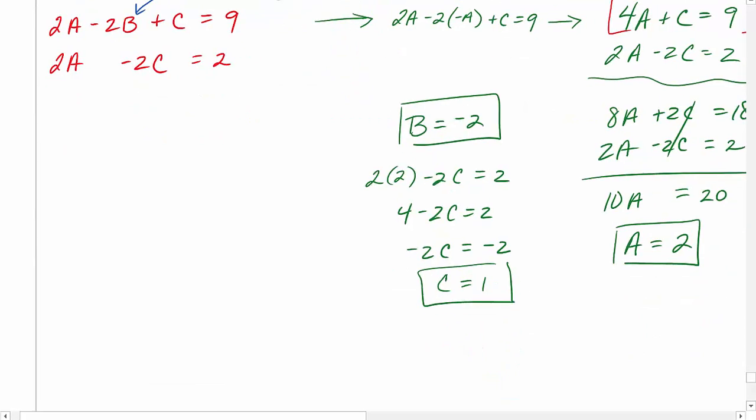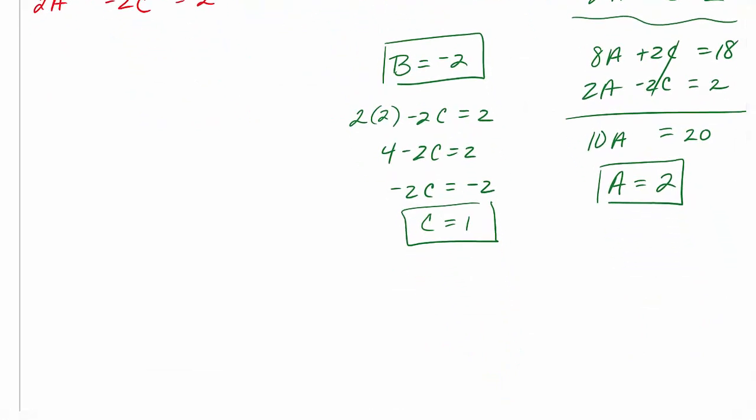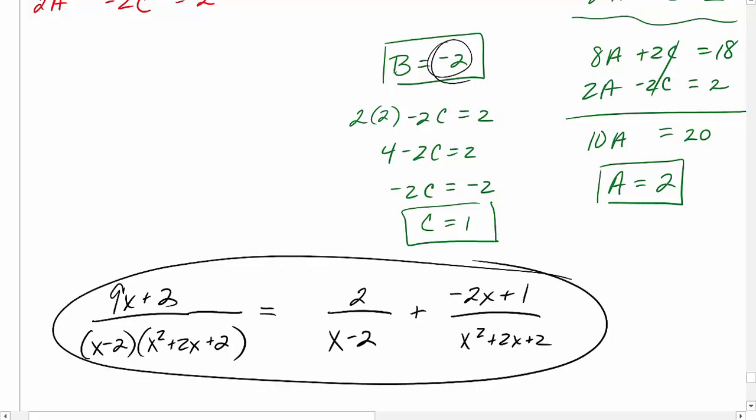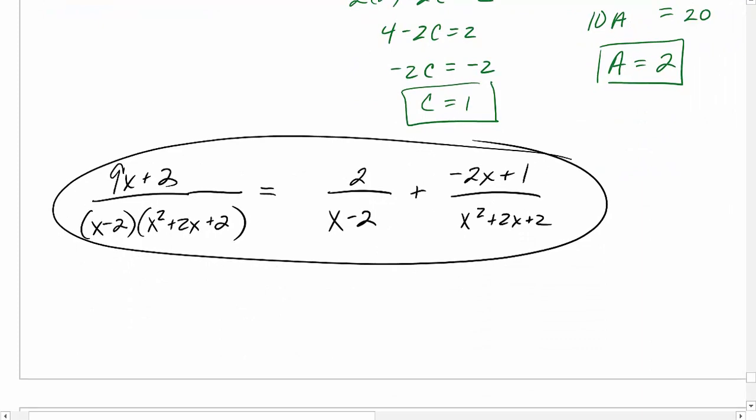9x plus 2 over x minus 2 times x squared plus 2x plus 2 is equal to 2 over x minus 2. And again, here's a case where this b is negative. I'd leave the negative up top. I'm going to write plus negative 2x plus 1 over x squared plus 2x plus 2. If you wanted to make it a minus in between those two fractions, you can, but you have to factor the negative out of that whole numerator. So it would be minus 2x minus 1 over our denominator. So both acceptable answers. I'm usually just safe about it and keep the plus in between.